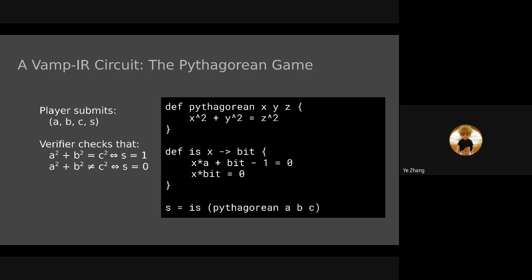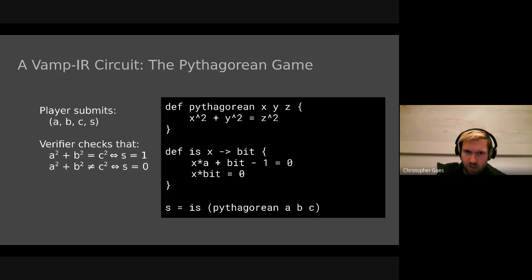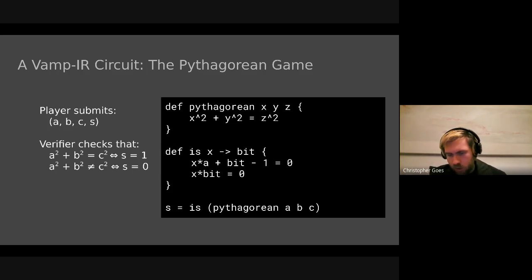Vampyr is in the early to mid prototype stage. There's a prototype supporting Halo 2 and Plonkish as backends; it can compile, prove, and verify. We're currently working a little bit with the Triton VM team to see if they can use this as well. We don't have other production users yet. Triton uses Stark. The internal encoding choices of a Stark are still compatible with this — it's just a different direction of components.